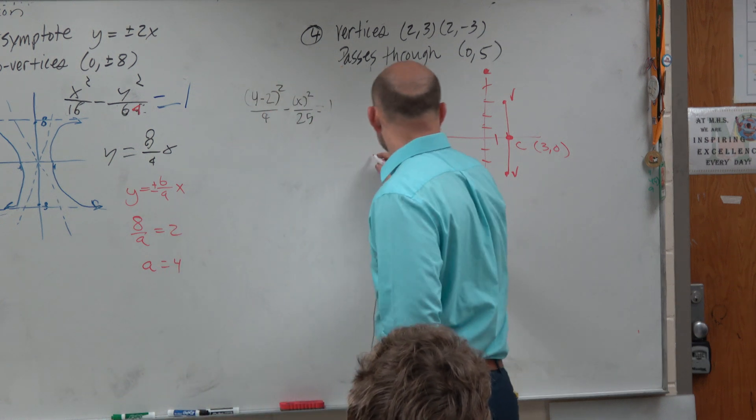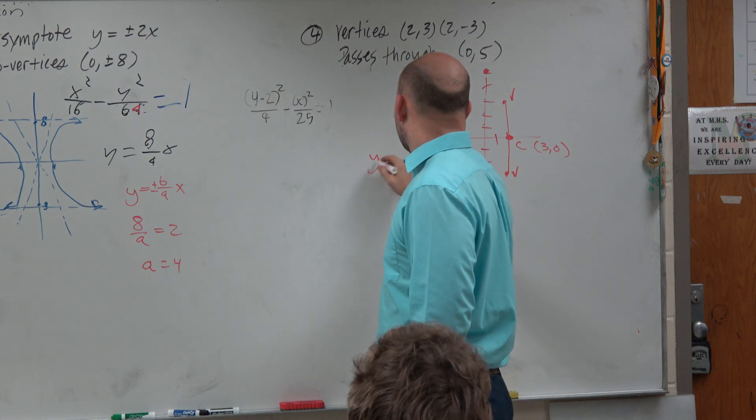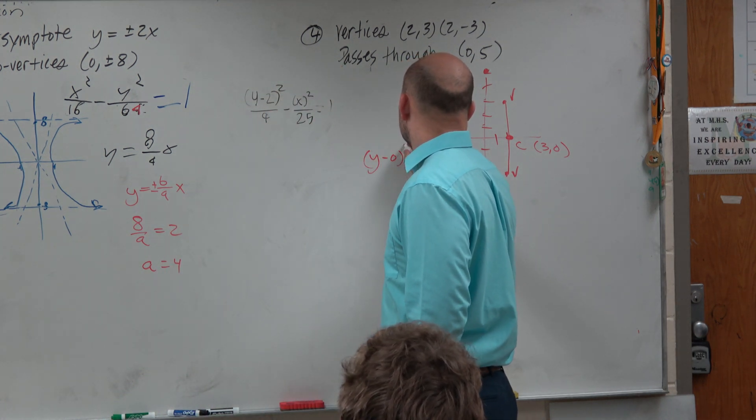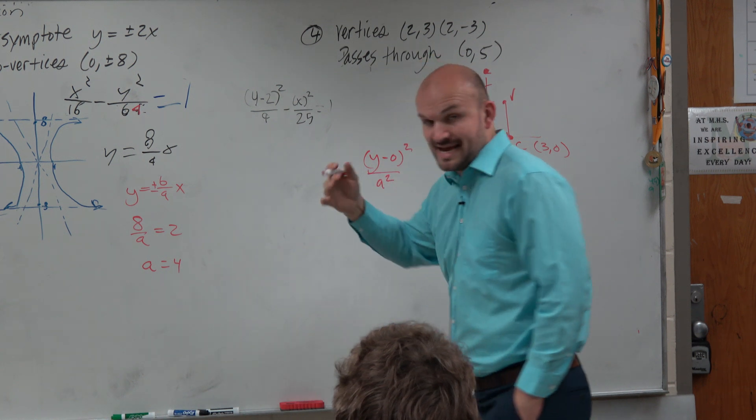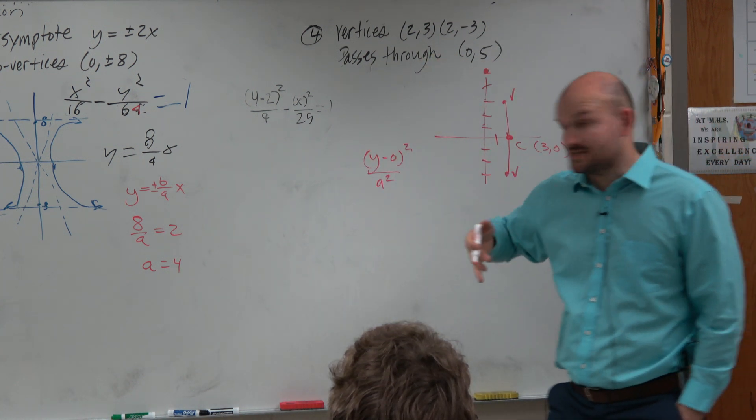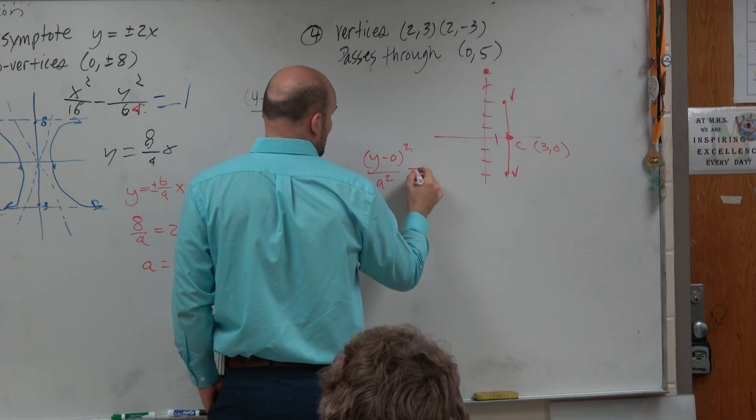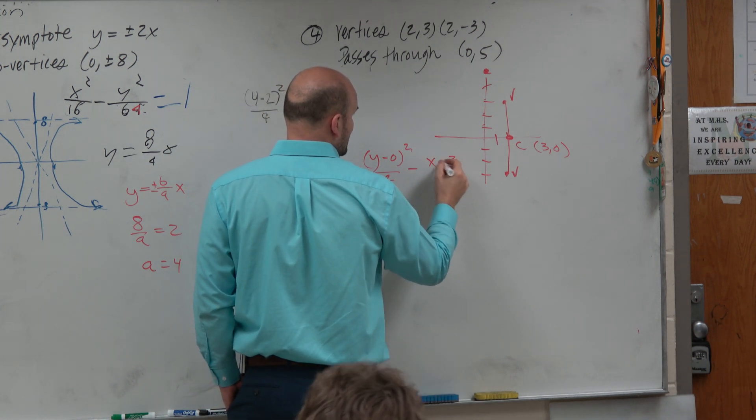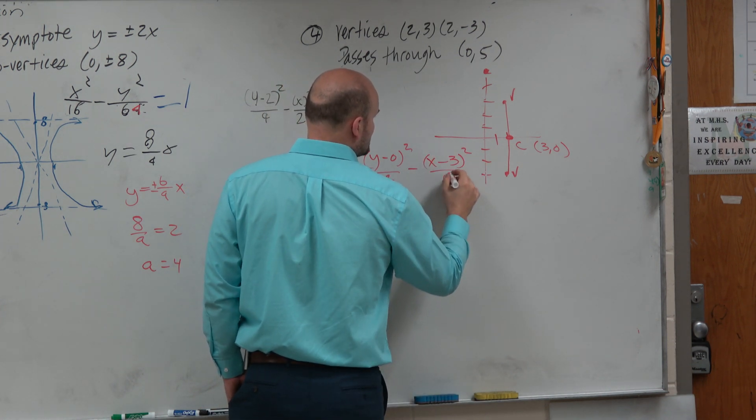So right now, at this point, we know that we have y minus 0 squared over a squared, because a squared needs to be under y, because the vertical transverse axis, minus x minus 3 squared over b squared equals 1.